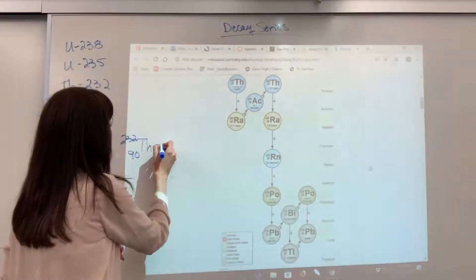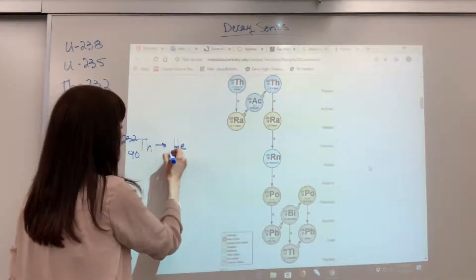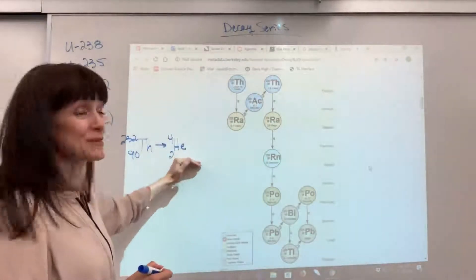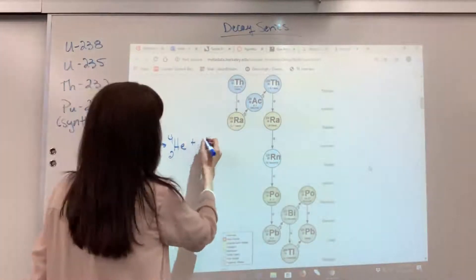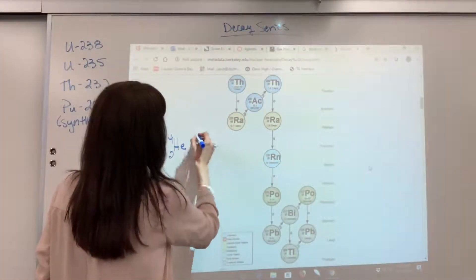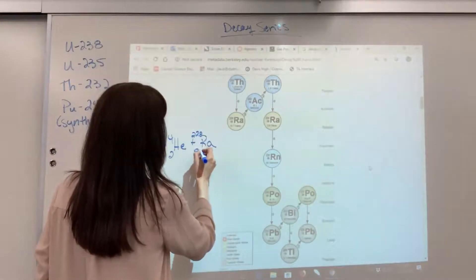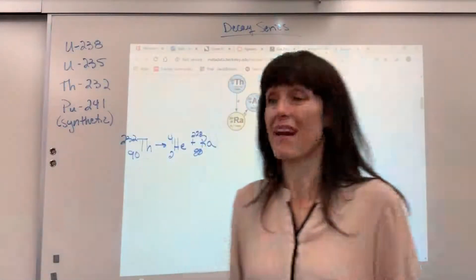So the alpha is going to be on the product side. And then the product, it gives it to us, is this radium-228. Now let's check it. You know how to balance nuclear reactions.